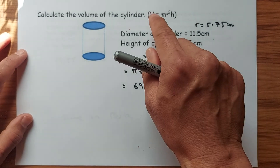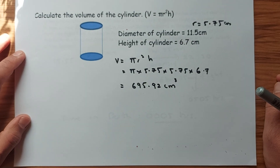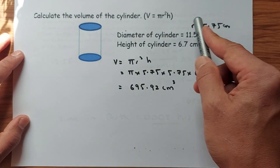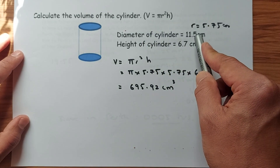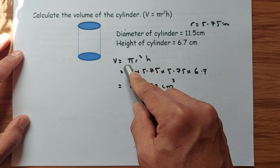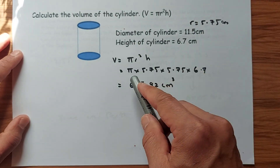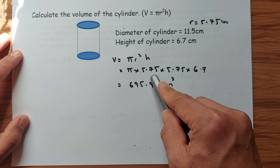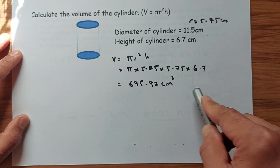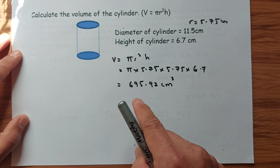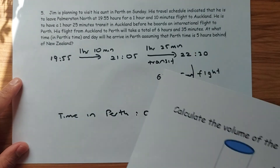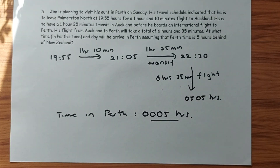Question four: calculate the volume of the cylinder. The formula is V = πr²h. The diameter is 11.5, so the radius is 11.5 ÷ 2 = 5.75. Substituting: π × 5.75² × 6.7. Put this in your calculator and the answer is 695.92. Make sure you include a unit for an extra mark in the exam.